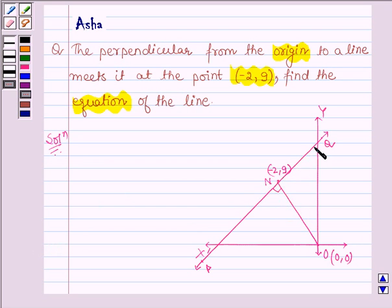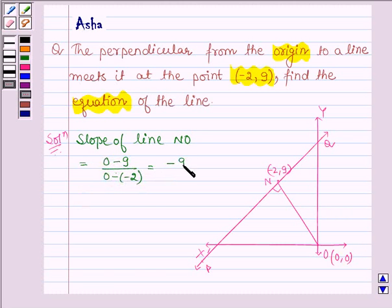So now we will try to find the slope of line P2. For that we will first find the slope of line NO. So now the coordinates of N are (-2, 9) and coordinates of O are (0, 0). So slope is equal to (0 - 9) upon (0 - (-2)). So we have -9 upon 2. This is the slope of line NO.